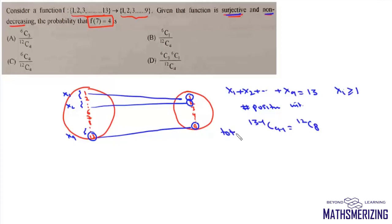The total number of ways in which these functions can be defined so that the function is both surjective and non-decreasing is 12 choose 8. Now in the favorable case we have 7 which is mapped to 4. If 7 is mapped to 4, then in how many ways can we define this function?